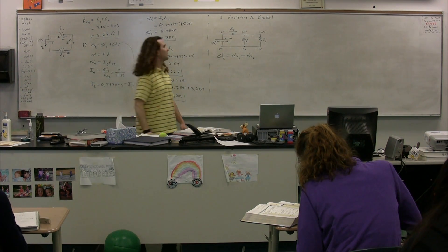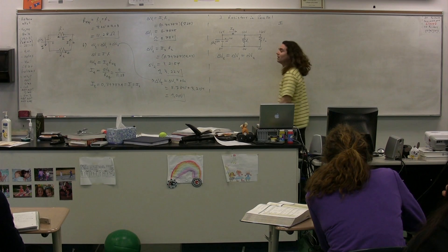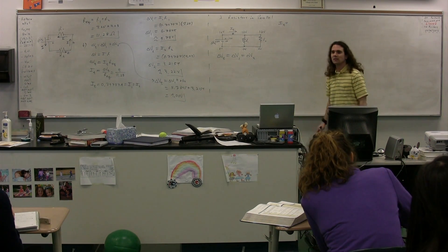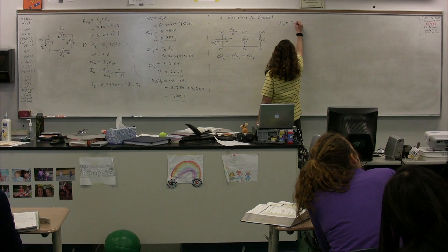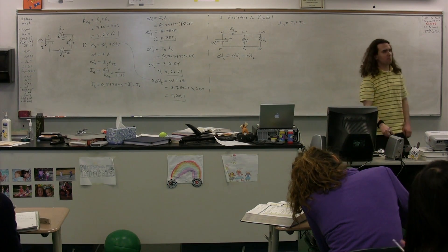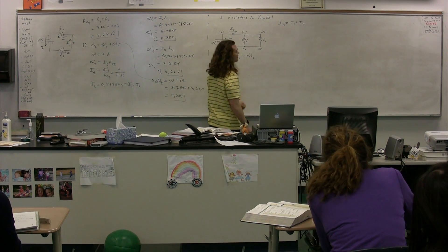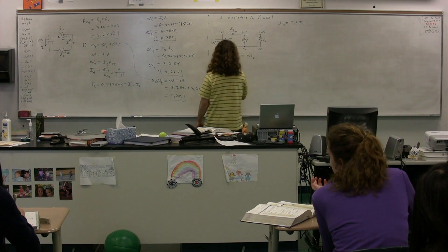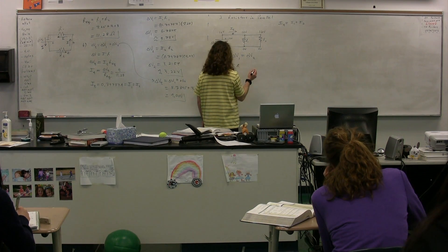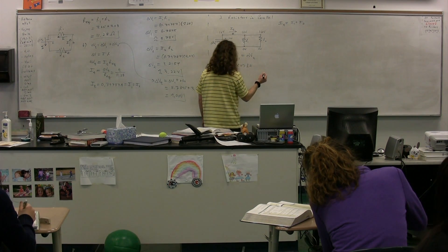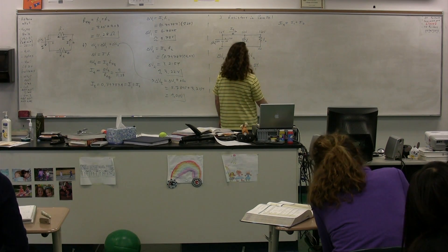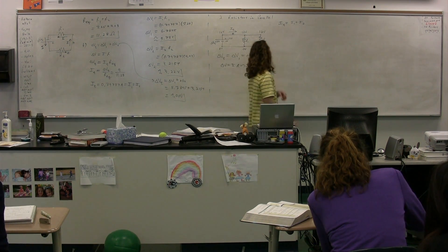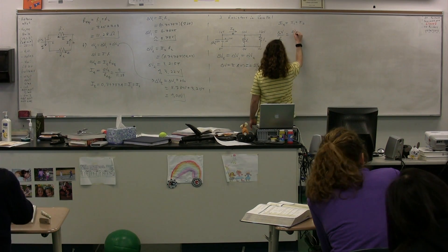Therefore, the current through both of the resistors adds up to equal the total current. The terminal current is equal to current one plus current two. When we add the two currents together, it equals the current delivered by the battery — because each charge is either going to go through resistor one or resistor two. Coming back to the equation for electric potential difference, we know that equals current times resistance. So we can rearrange this: current equals electric potential difference divided by resistance. And I can substitute that expression in for each one of these currents.